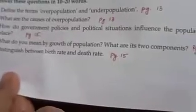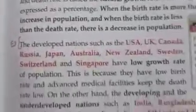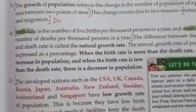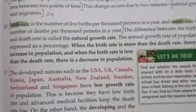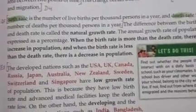Let us move to the next question — question number 5: distinguish between birth rate and death rate. The answer is on the same page. Here you can see D5: birth rate and death rate.